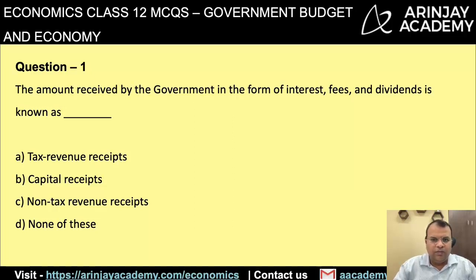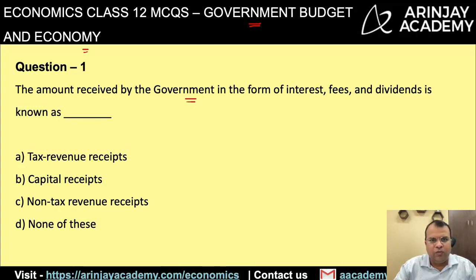Let's now look at the multiple choice questions relating to government budget and economy. The first question is: the amount received by the government in the form of interest, fees and dividend is known as tax revenue receipts, capital receipts, non-tax revenue receipts, or none of these.